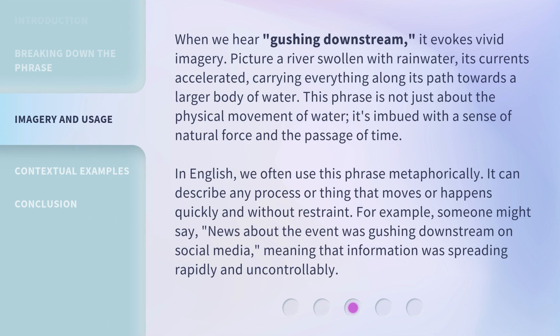When we hear 'gushing downstream,' it evokes vivid imagery. Picture a river swollen with rainwater, its currents accelerated, carrying everything along its path towards a larger body of water. This phrase is not just about the physical movement of water — it's imbued with a sense of natural force and the passage of time. In English, we often use this phrase metaphorically. It can describe any process or thing that moves or happens quickly and without restraint. For example, someone might say, 'News about the event was gushing downstream on social media,' meaning that information was spreading rapidly and uncontrollably.